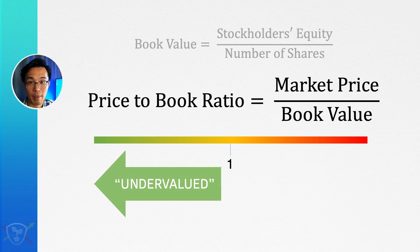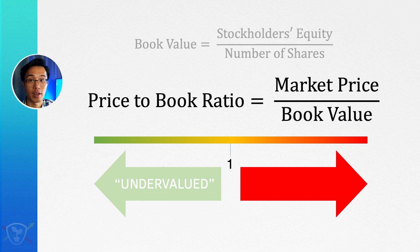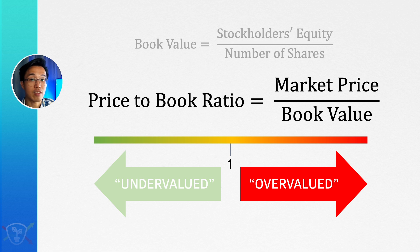If the PB ratio is above one, that means for every dollar of equity, for every dollar of book value, we're going to be paying more than one dollar. This could suggest that the shares may be overvalued. And that's really all there is to it — simple and straightforward to calculate.